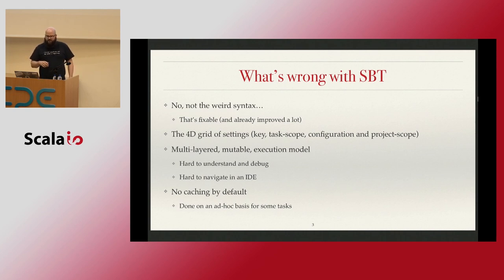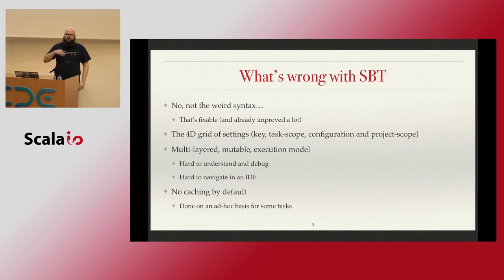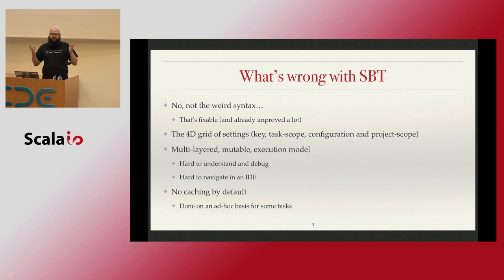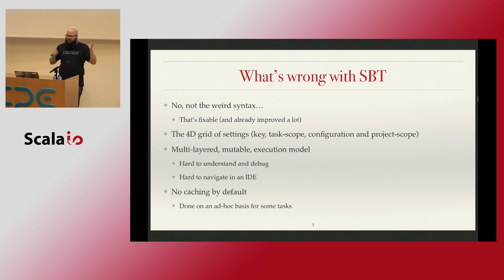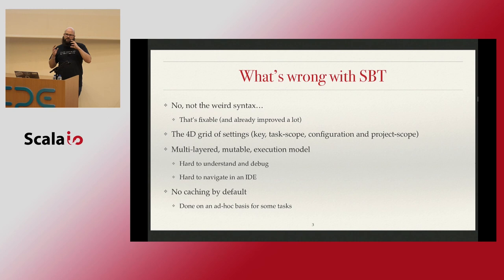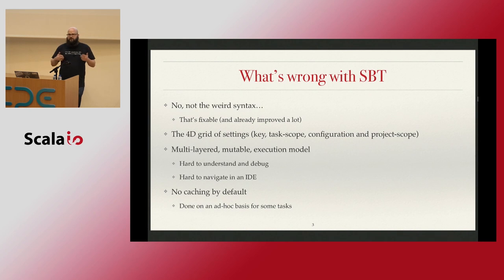But there are some underlying issues in SBT in the main architecture of the project, and that's why a lot of people have been trying to create new build tools for Scala. The first thing that's kind of weird is: you have a setting key somewhere in your build — like which Scala version to use, which options to pass to the Scala compiler. How do you resolve it? How do you find what value is used? This is basically a four-dimensional grid. There is the key itself, it has a name which sits in a global namespace, it can be scoped based on which task to use, based on a configuration, and of course based on project scope.